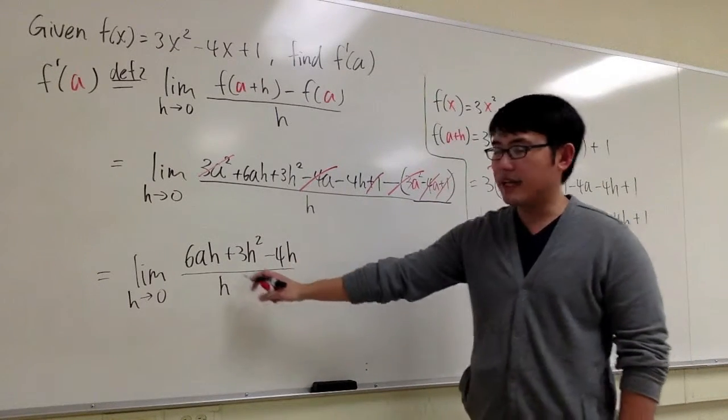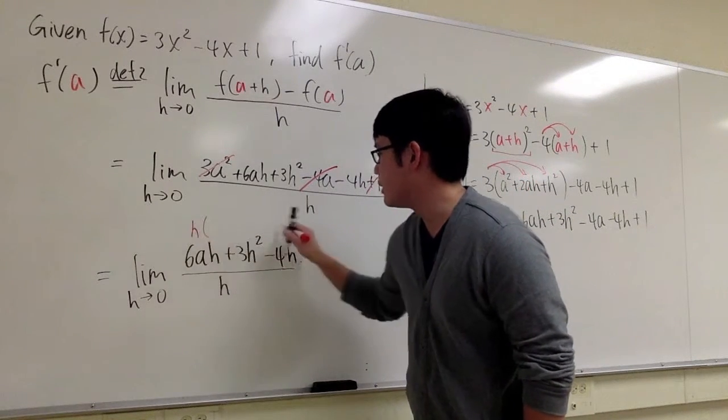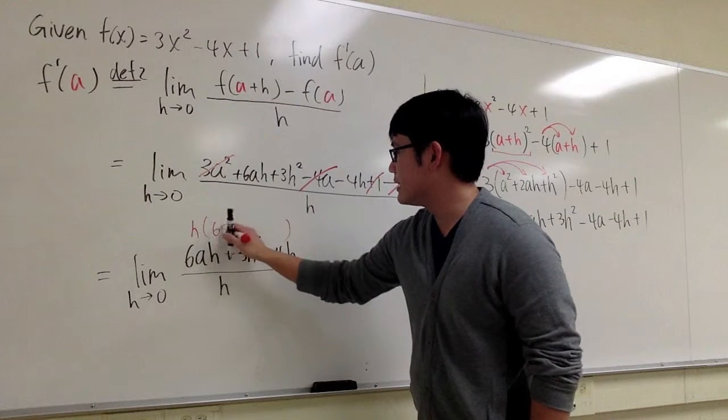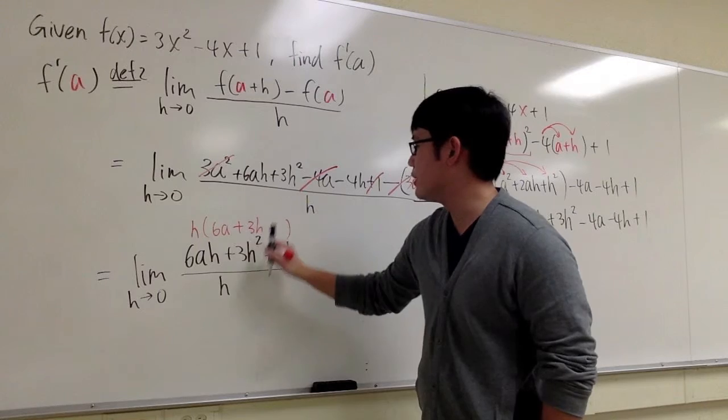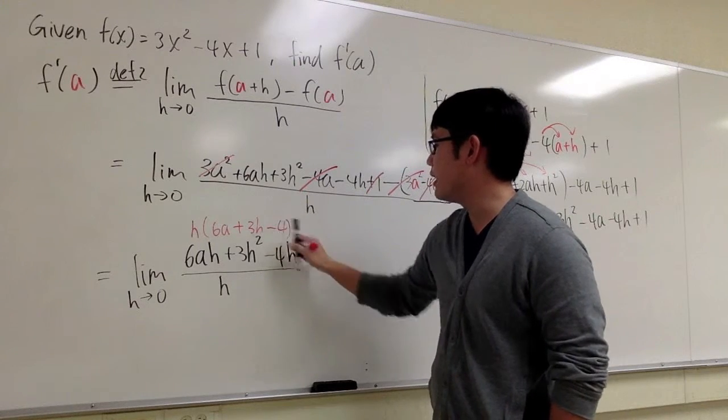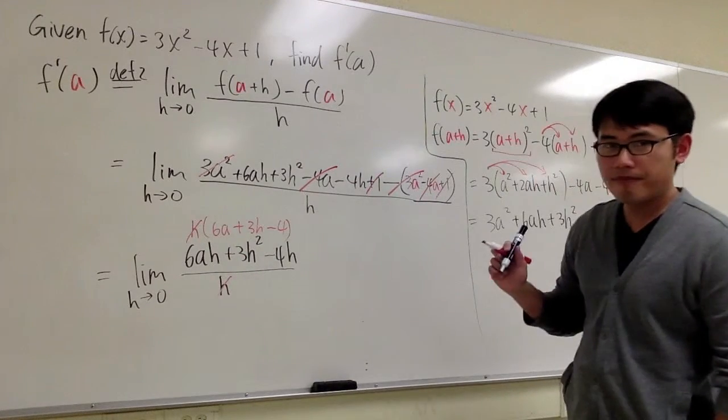And the good thing is that everybody on the top have h. I can factor out the h. So if I factor out the h, I will have 6a left, and then + 3h left, and then - 4 left. This h and that h can cancel each other out.